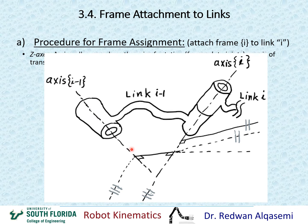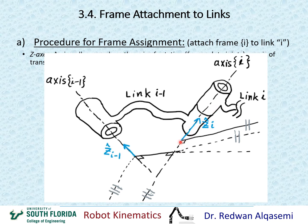I'm going to assign the Z axis along this line. At this point, I can start anywhere on the line because I don't have an origin for my frame yet. This would be Z_{i-1}, and then this is the axis of rotation or translation for joint I, so I can assign Z_i along this line. I put Z_i here along axis I, and Z_{i-1} along axis I minus one.